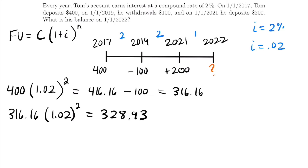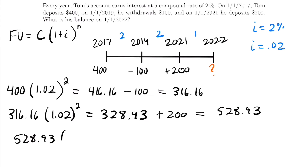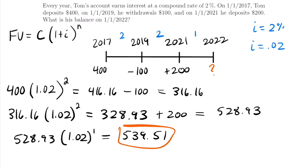The next thing on our timeline is Tom's deposit of $200 more, so we add that $200 to get $528.93. We now have the amount at the beginning of 2021. We just need to compound it for one more year to find the amount at the beginning of 2022. So we take $528.93, compound it for one year, and get our final answer of $539.51. That's the long way — it works but it's quite tedious.